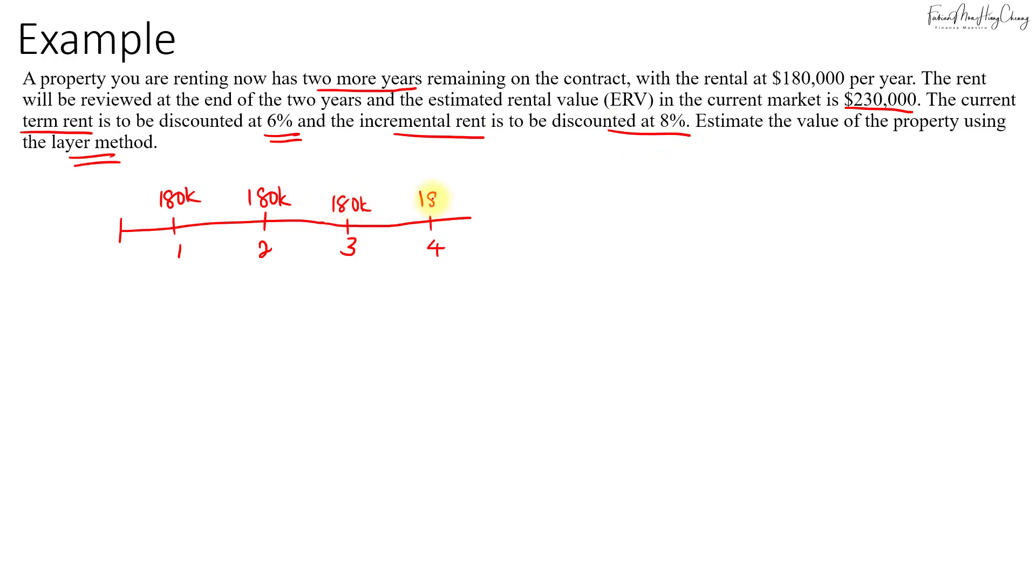For the incremental rent starting from year three onwards, we'll add it on top of the term rent, so there's $50,000 here in perpetuity that goes on forever. Under the layer method we will present value these two streams of rentals separately as a perpetuity.